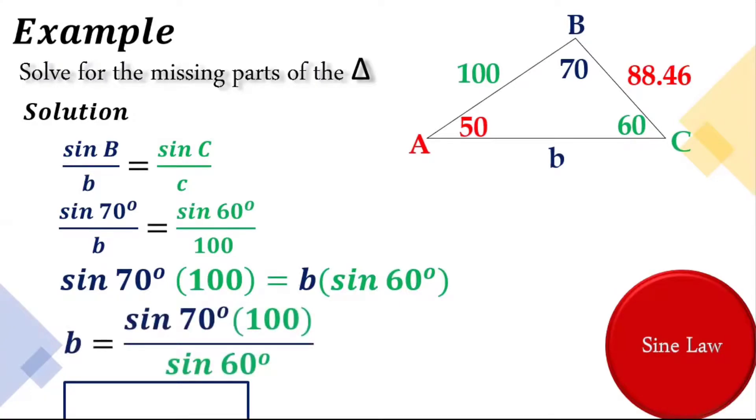So b now is equal to sine 70 degrees times 100 over sine 60 degrees. Using calculator, let's compute, and b is equal to 108.51.